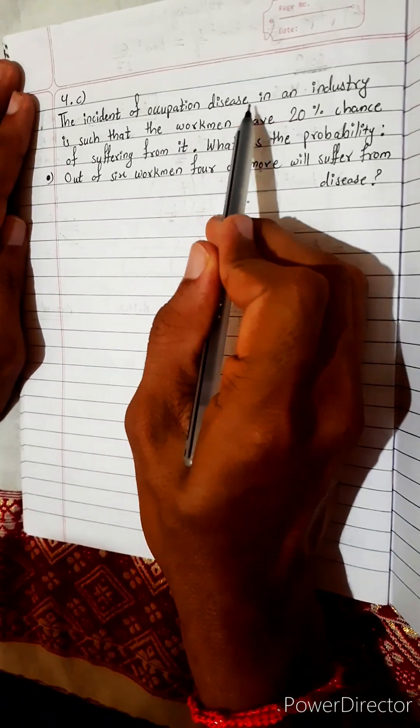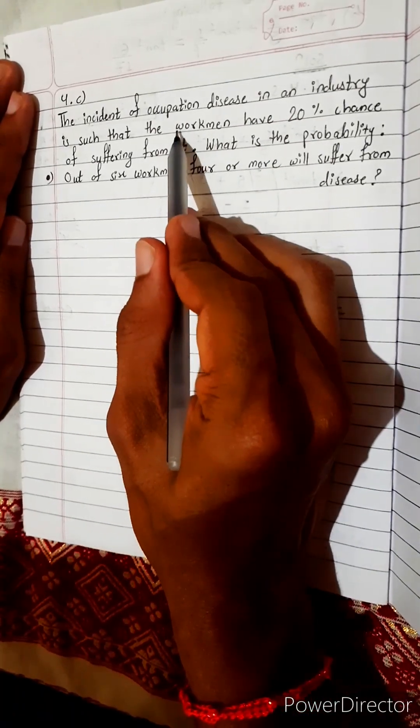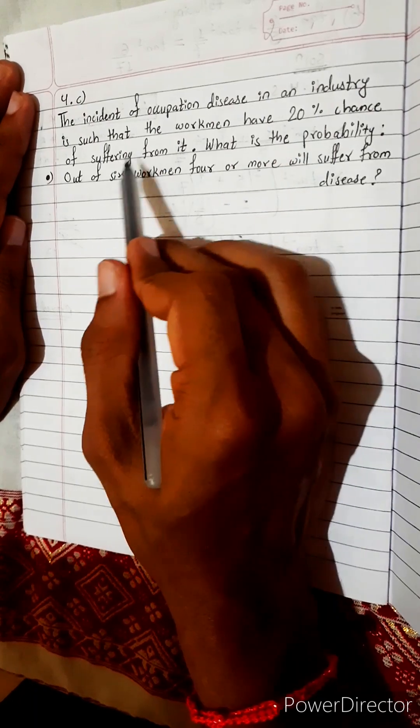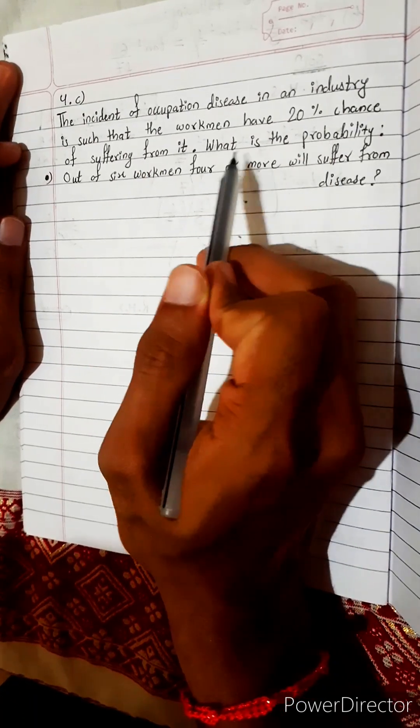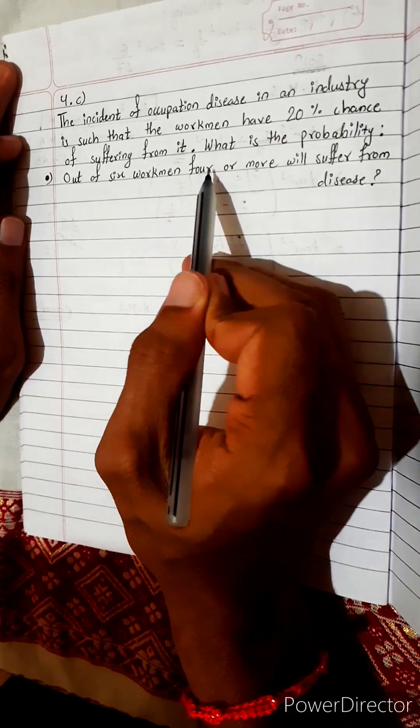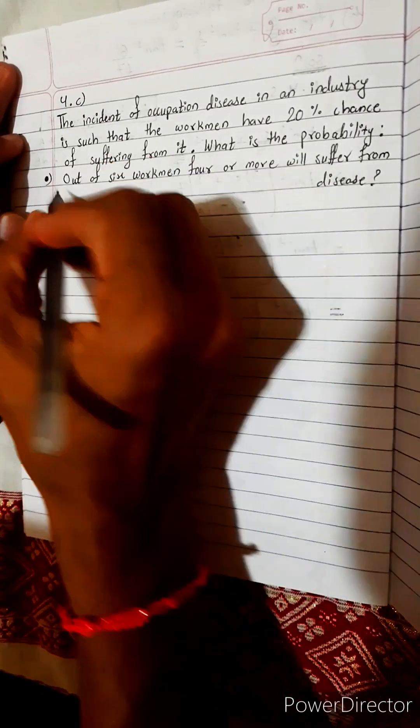The incident of occupation disease is an industry problem. In such that the workmen have a 20% chance of suffering from it. What is the probability that out of 6 workmen, 4 or more will suffer from the disease?